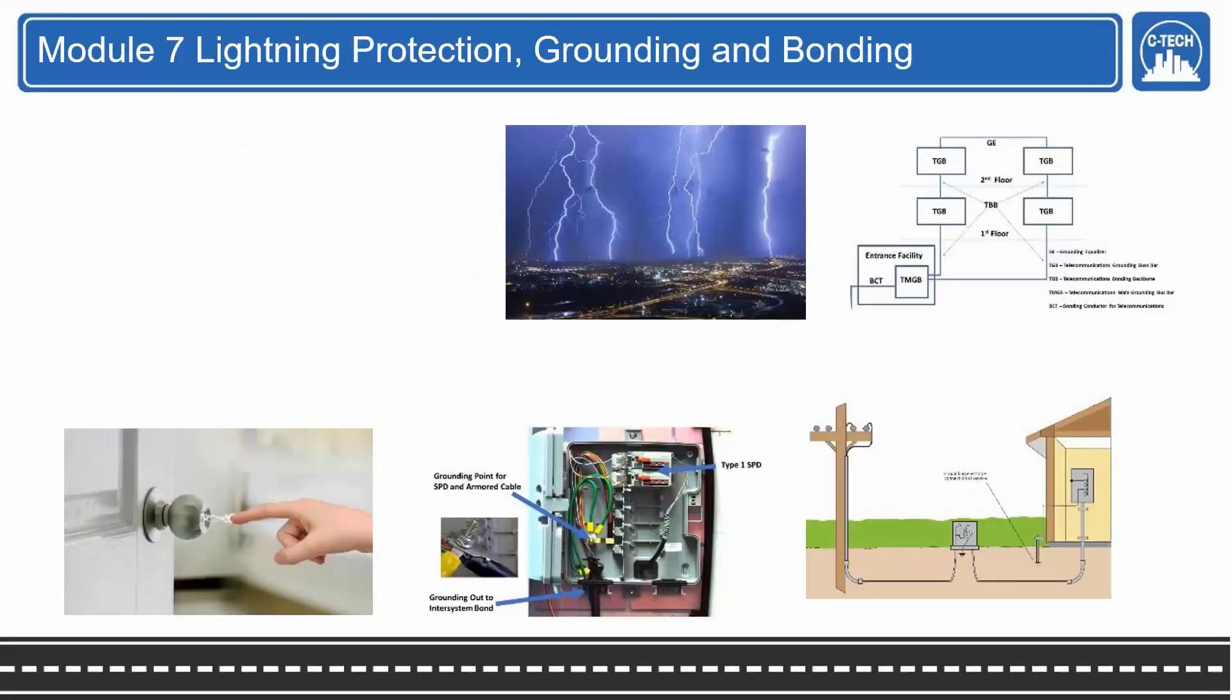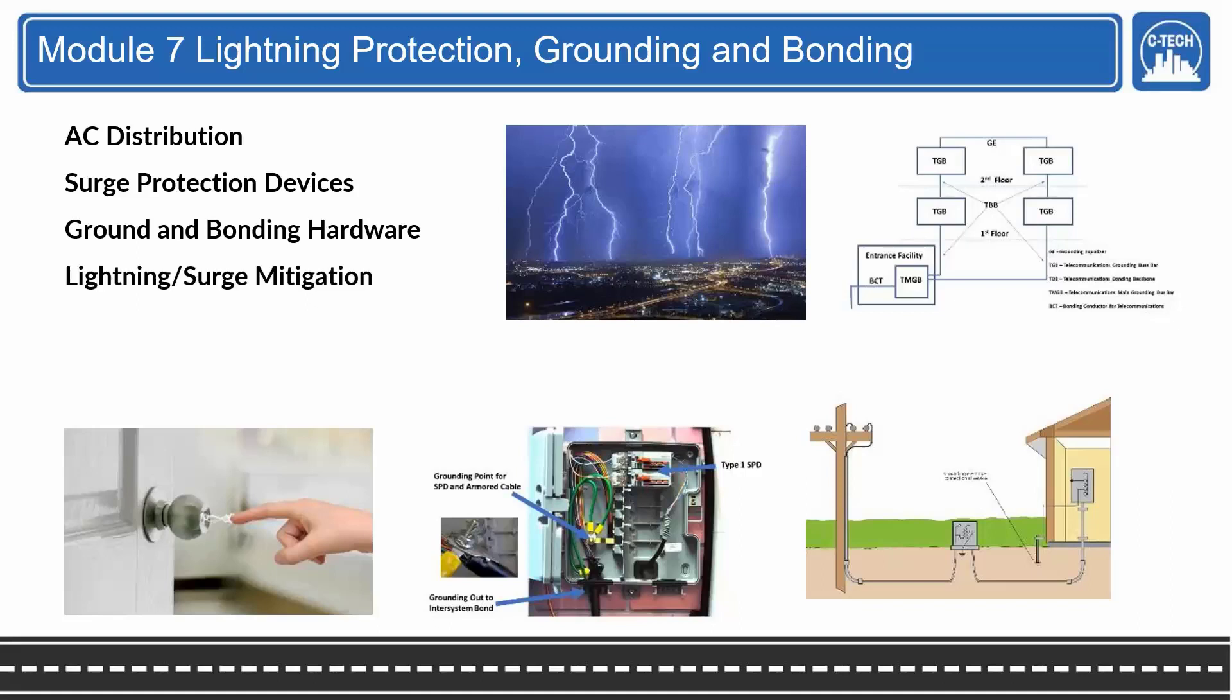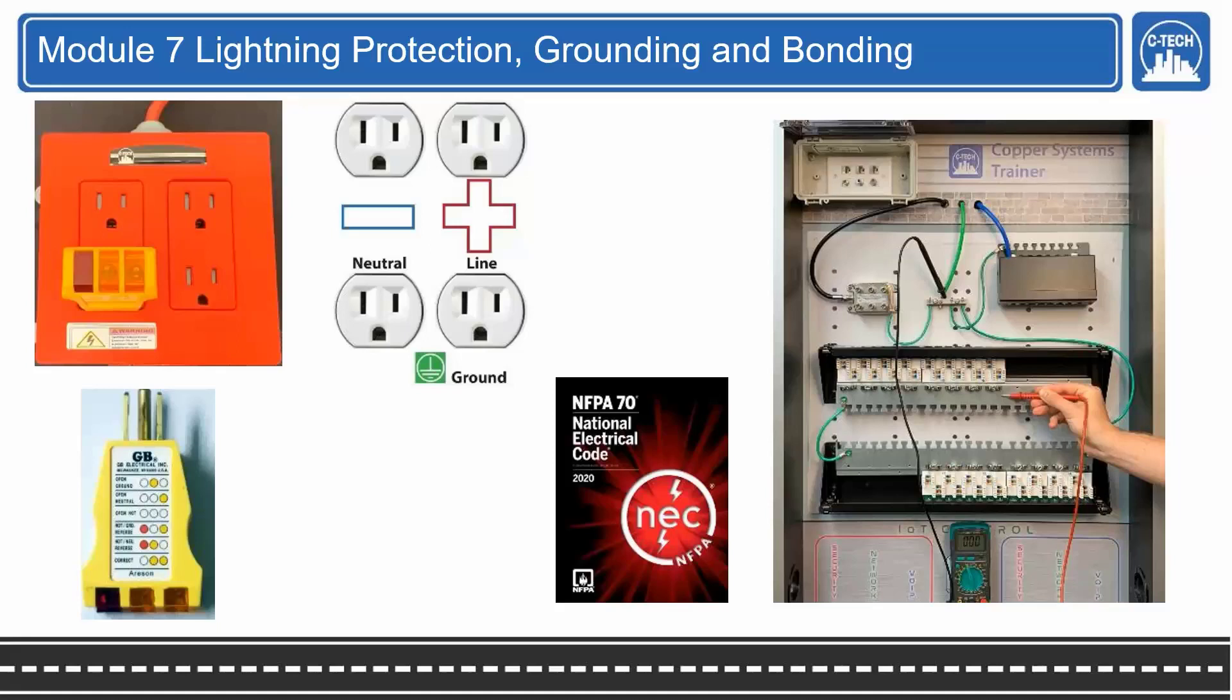Module 7 deals with lightning protection and grounding and bonding. We're going to start with AC distribution. Surge protection devices and mitigation strategies to dissipate those, and that's all done with grounding and bonding hardware. Lightning and surge mitigation. And of course we're going to familiarize them with the National Electric Code. So not that they have to fix anything, but they have to make sure that it's grounded correctly.